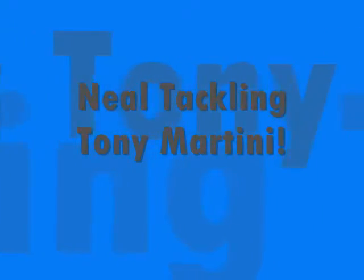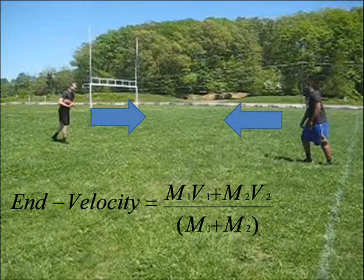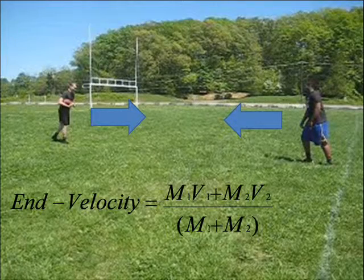This is Neal tackling Tony. The end velocity is M1 times V1 plus M2 times V2 over M1 plus M2.